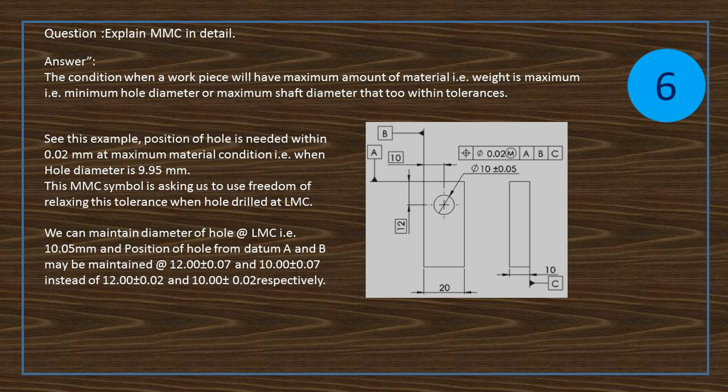This MMC symbol is asking us to use freedom of relaxing this tolerance when hole drilled at LMC. We can maintain diameter of hole at LMC, that is 10.05 millimeters, and position of hole from datum A and B may be maintained at 12 ± 0.07 and 10 ± 0.07, instead of 12 ± 0.02 and 10 ± 0.02 respectively.